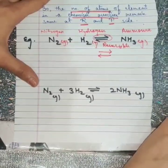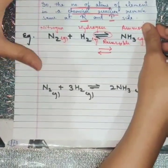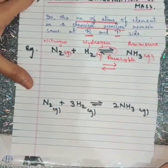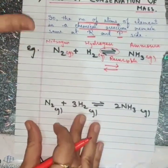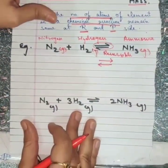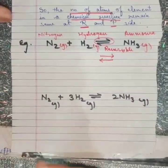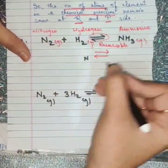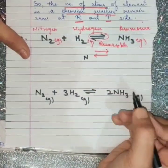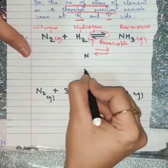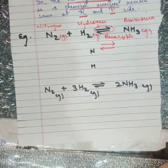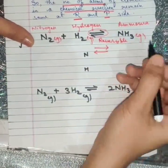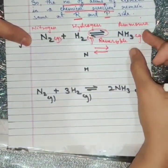Now let's see how to balance this equation. There is no specific formula to balance a chemical equation — we apply the hit and trial method. First, write down all the atoms present in the chemical equation. You can see nitrogen and hydrogen on both sides — only these two atoms are present on both the reactant and product sides.